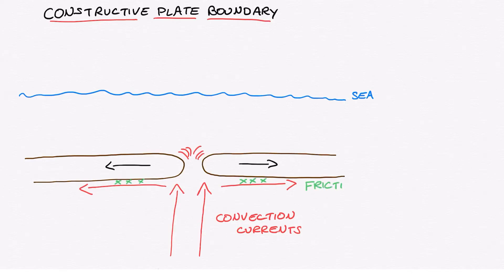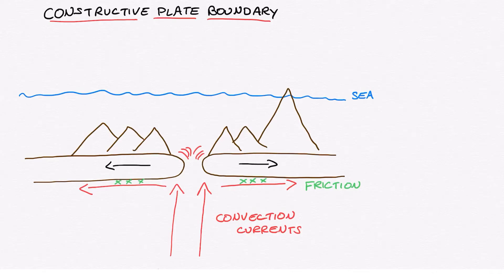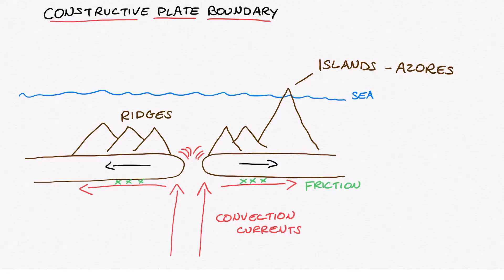As these plates move apart, magma will escape from inside the crust and will start to form underwater volcanoes. These can grow and form ridges on either of the different plates. These ridges can also grow and sometimes extend upwards until they breach the surface of the sea, forming seamounts or volcanic islands, such as the Azores Islands found in the Atlantic Ocean.